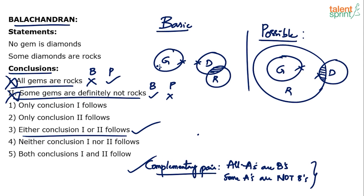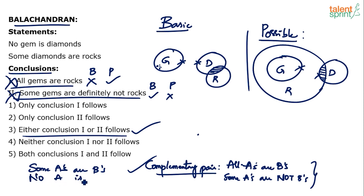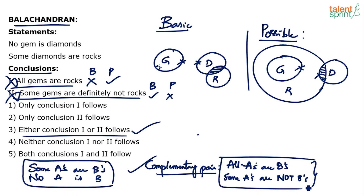Don't be in a hurry when answering questions from syllogisms. When the conclusions fail independently, check if there is a complementary pair between them and verify it. The two complementary pairs are: all A's are B's and some A's are not B's; and some A's are B's and no A is B. What we have in this question is the second one.